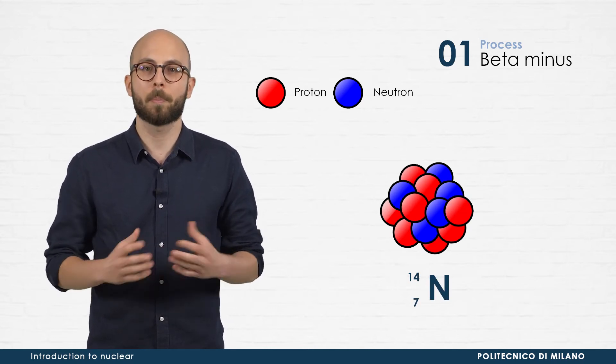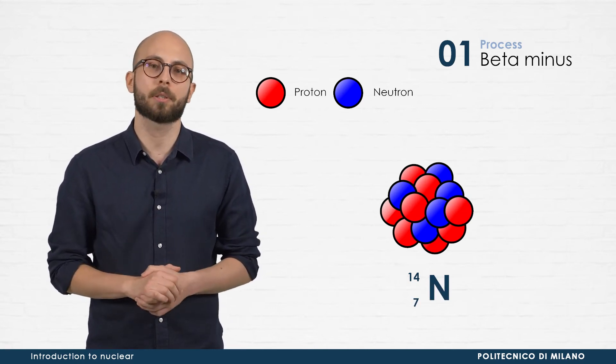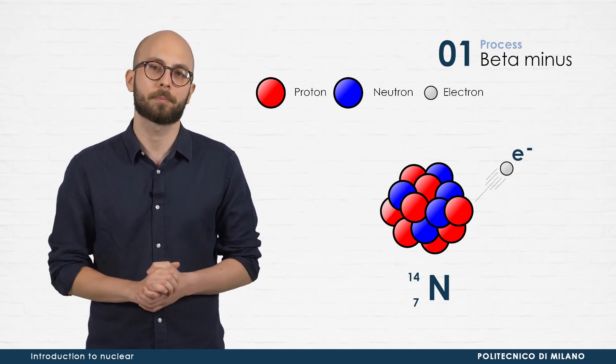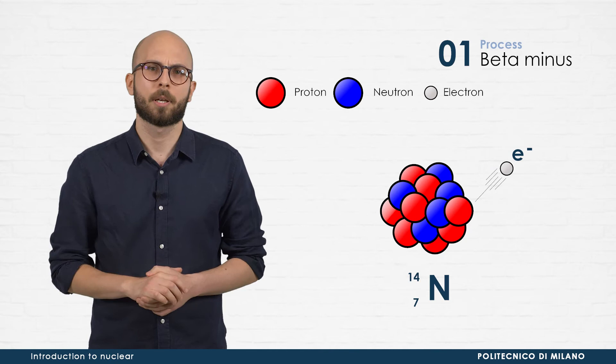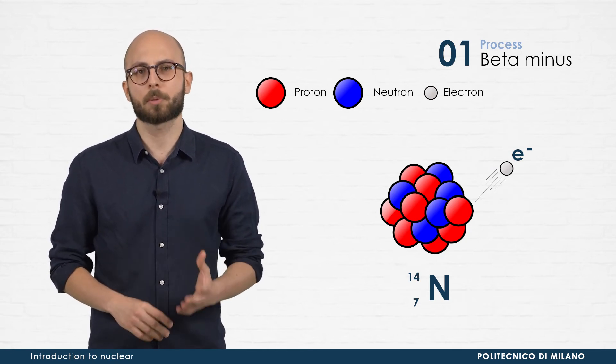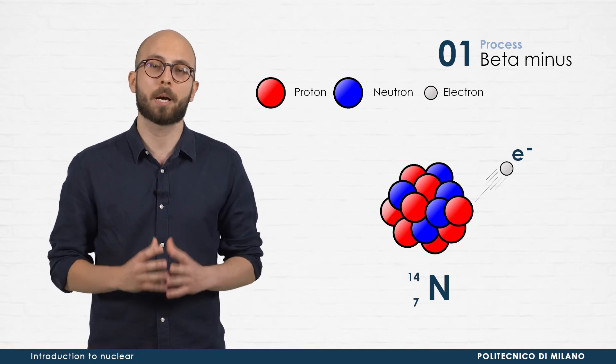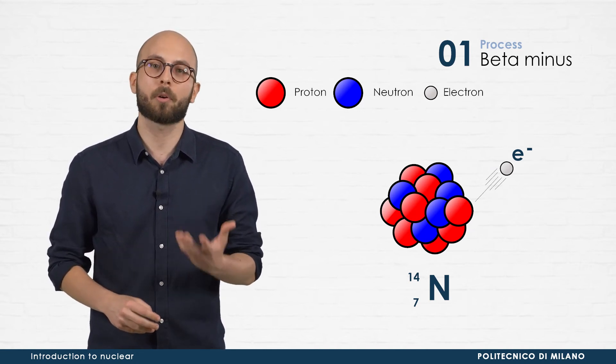This conversion process involves a variation of the charge of the nucleus. Therefore, to obey the law of charge conservation, the transformation proceeds with the emission of one electron. But pay attention! The emitted electron does not belong to the ones that orbit the nucleus, but is a brand new particle, created in the nucleon conversion process.